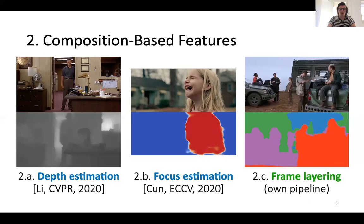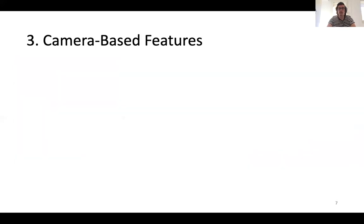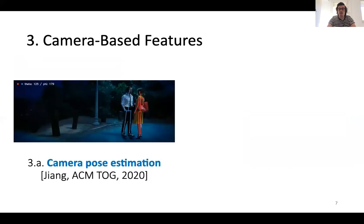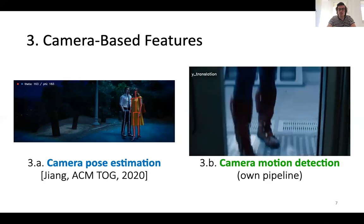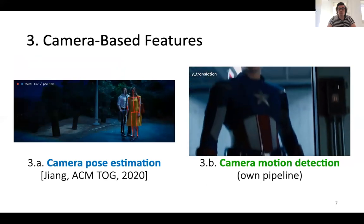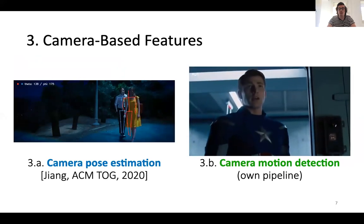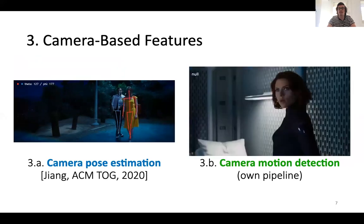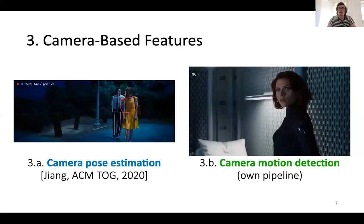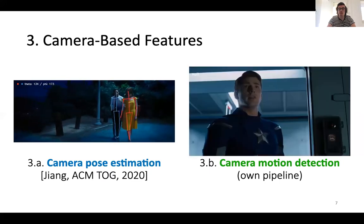For instance, the layers include the foreground, the different middlegrounds, and background. Finally, we have two camera-based features — one that already exists and one that we propose: camera pose estimation in the 3D space to understand camera behavior, and camera motion detection. For camera motion detection, we designed a pipeline that estimates the six degrees of freedom of the camera from the optical flow.